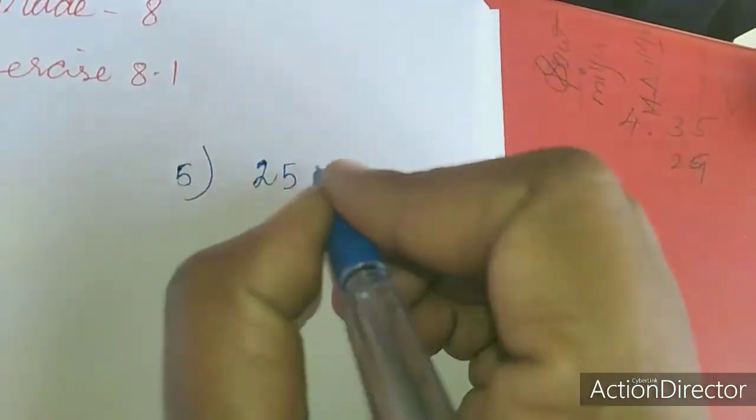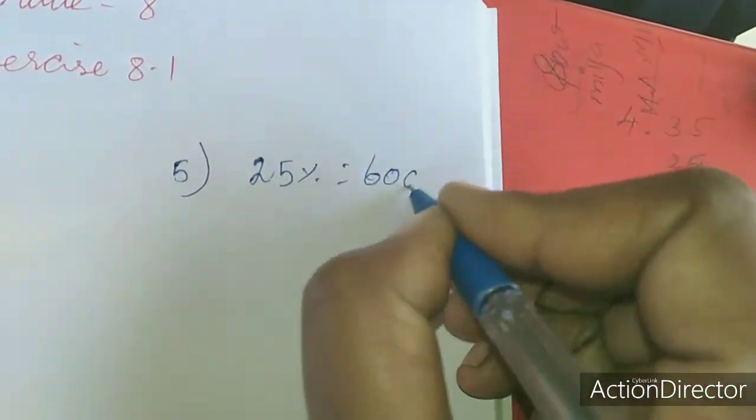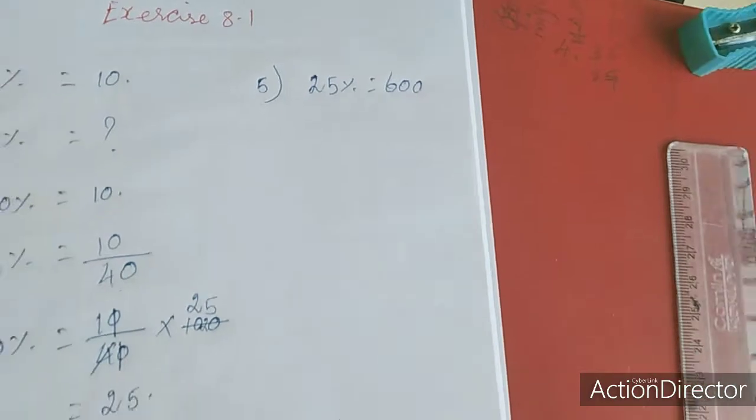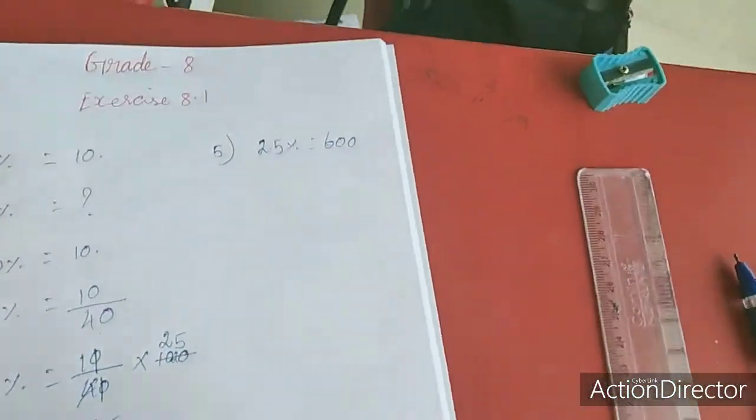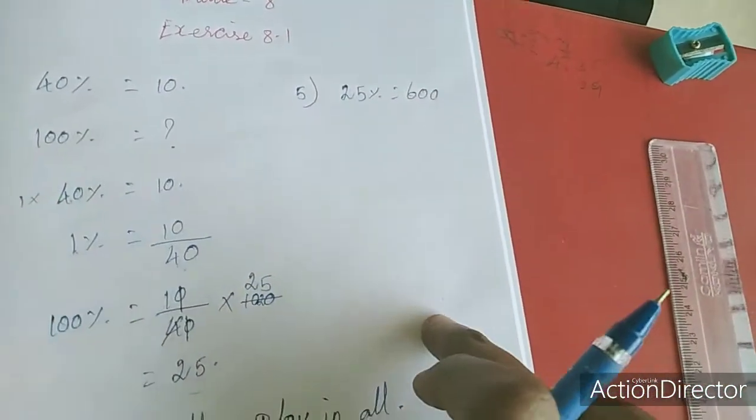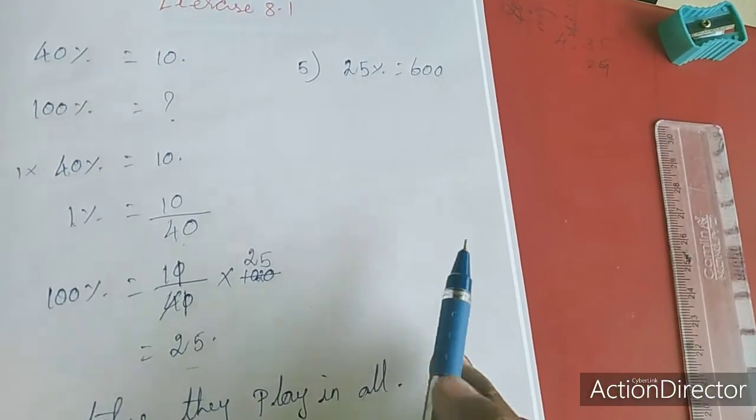So 25% equals 600. Same method we use. We're going to use 100%, so we work out 100%.